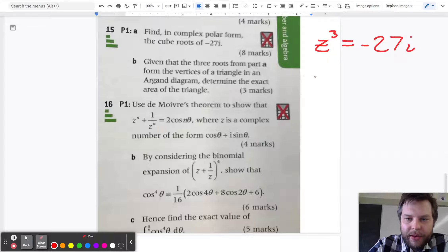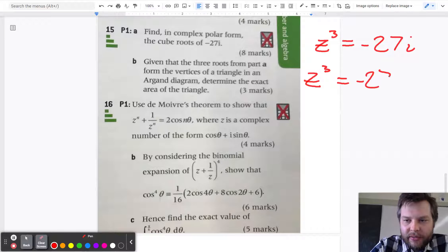And I'm going to rewrite that in our polar form, in Euler's form. So we have negative 27, that's the r, times e to the...